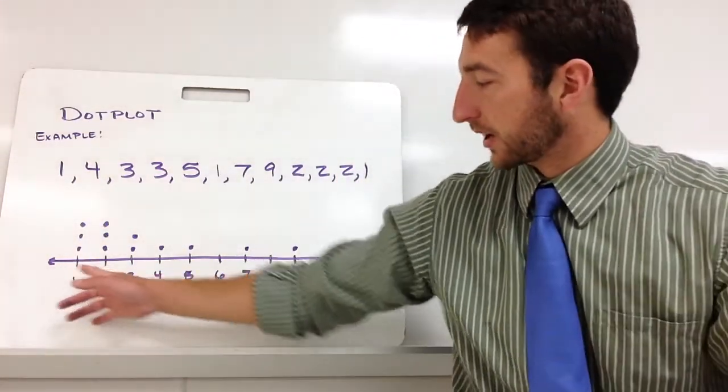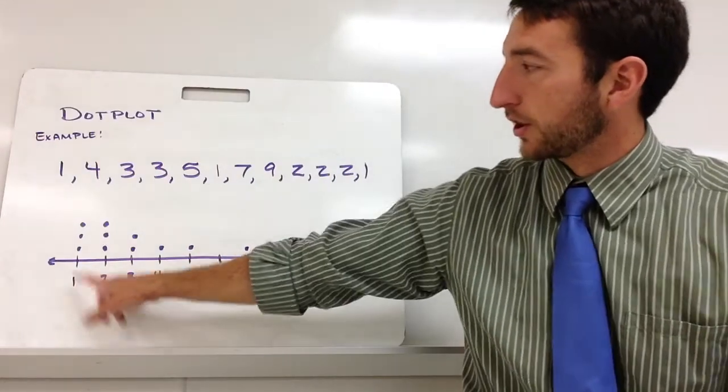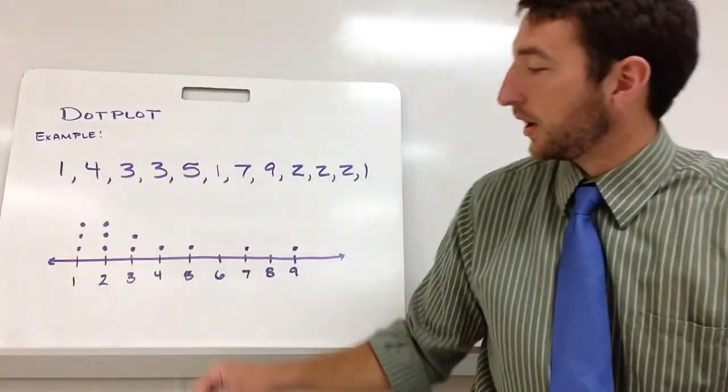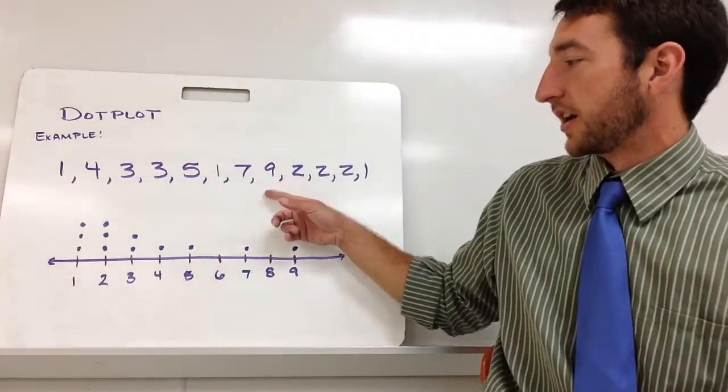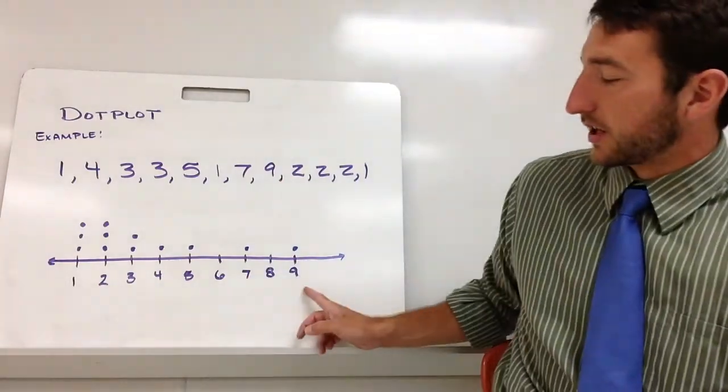What you have to do is make a number line, starting with the lowest number that we have, which is one, go to the biggest number that we have, which is nine, and go up by ones each time.